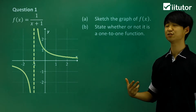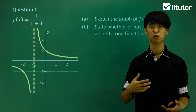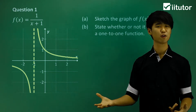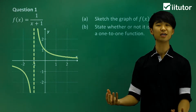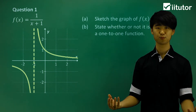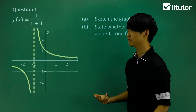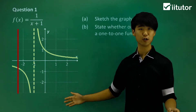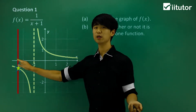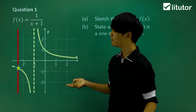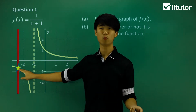In part b, it says to state whether or not it is a 1-to-1 function. Let's think about what it means for a function to be 1-to-1 — it's intuitive from its name. For every x value in my domain, I should have one corresponding y value. One way to check this is to do a vertical line test. I'm going to draw a vertical line straight down, at around x = -2.5.